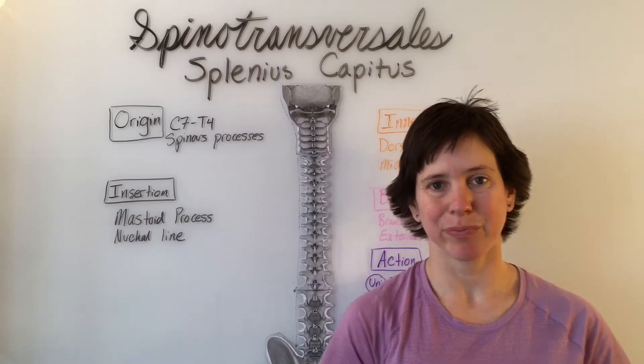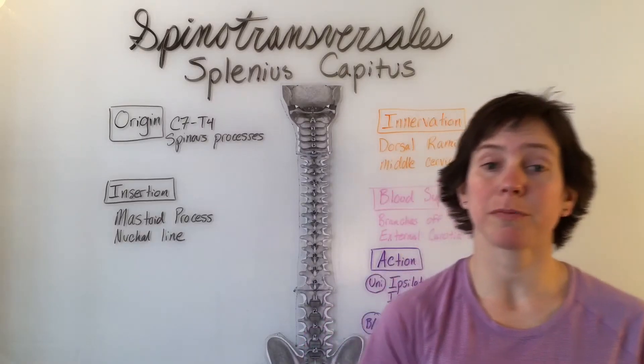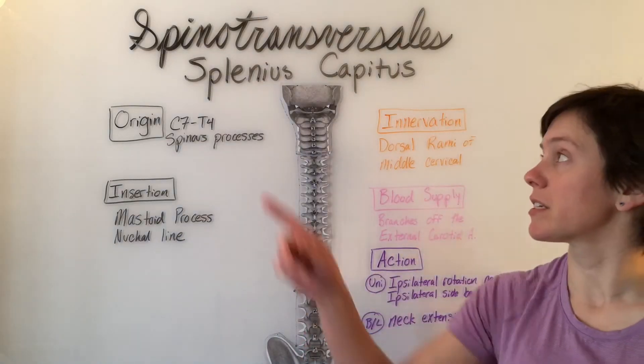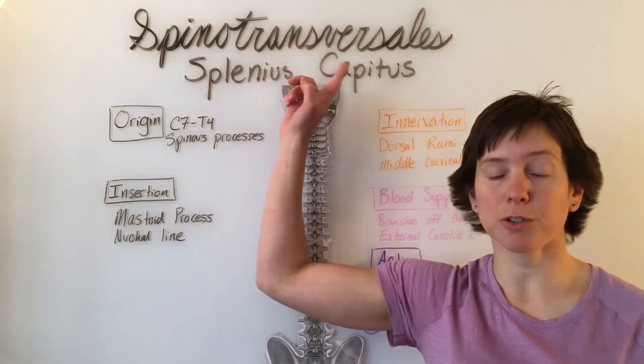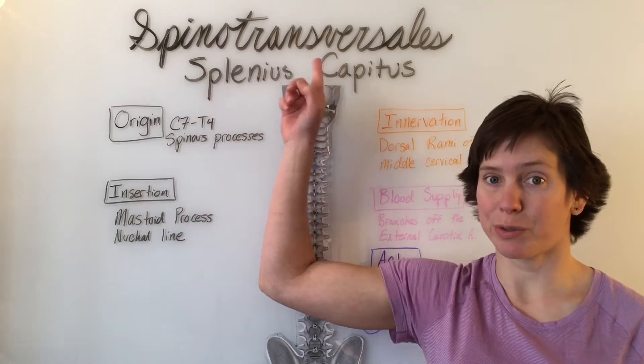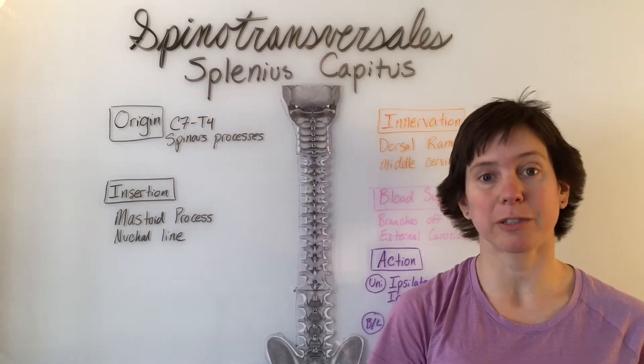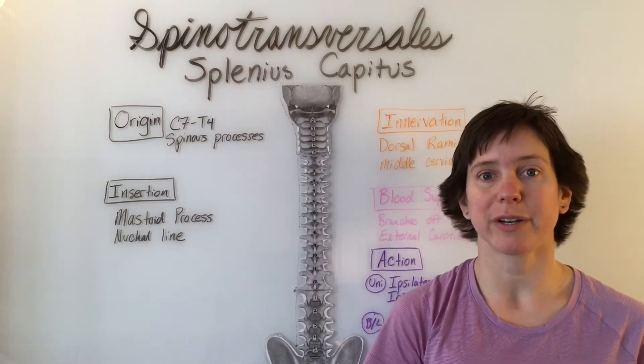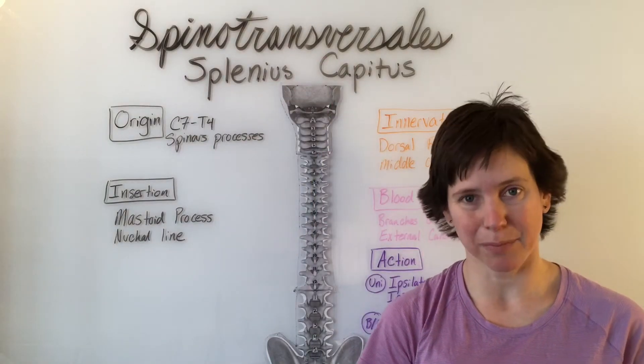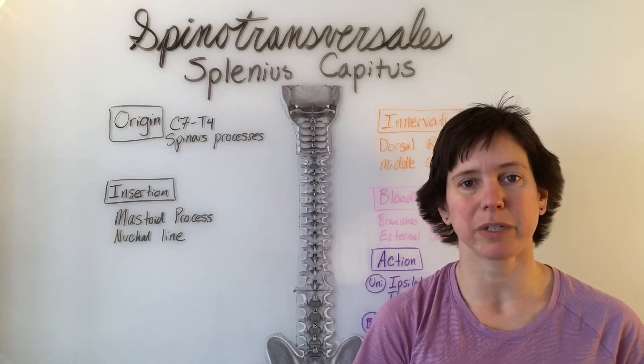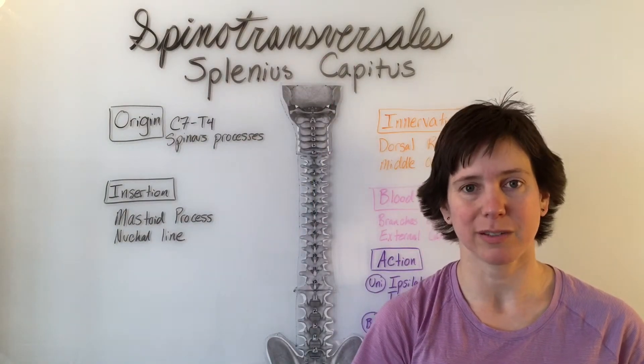In the deep back, a group of muscles known as the spinotransversalis group consists of two muscles: the splenius capitis and the splenius cervicis.